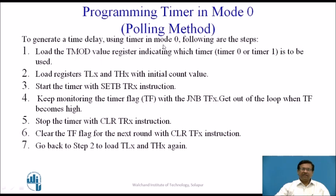To generate a time delay using the timer in mode 0, follow these steps. First, load the TMOD register indicating which timer is to be used. Next, load TLX and THX with the initial count value. Then set TR to start the timer. Keep monitoring the TFX flag using the JNB TFX instruction and exit the loop when TFX becomes high. After that, stop the timer with the CLR TRX instruction. Then clear the TF flag for the next round with the CLR TFX instruction, and go back to step 2 to reload TLX and THX.